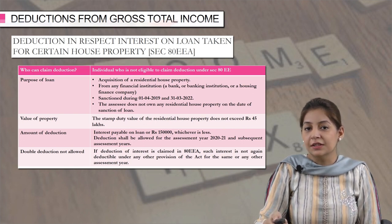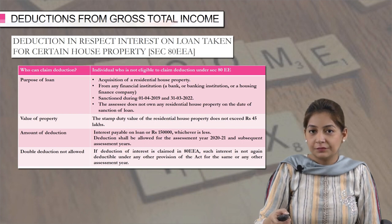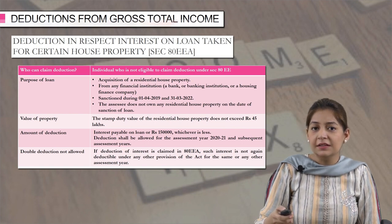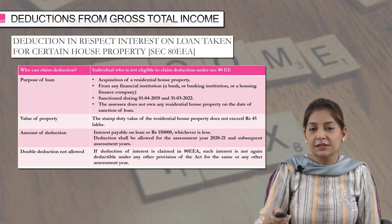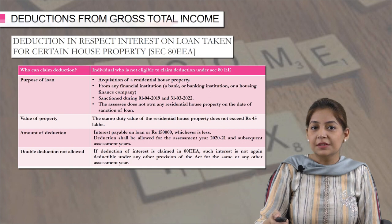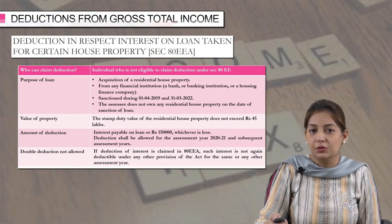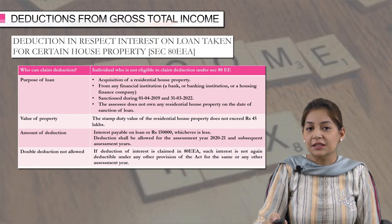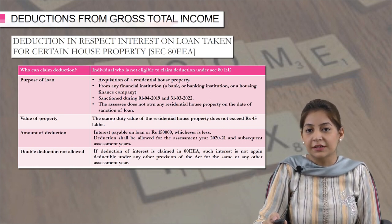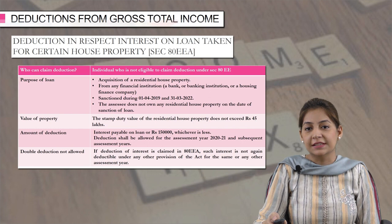Here lies the difference. In the previous slide, the sanction period was 1st April 2016 to 31st March 2017. But when we talk about 80EEA, the sanction period is 1st April 2019 to 31st March 2022. Again, the condition is that the assessee does not own any residential house property on the date on which he is taking the loan.